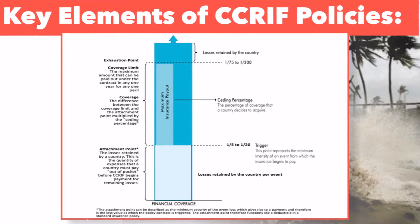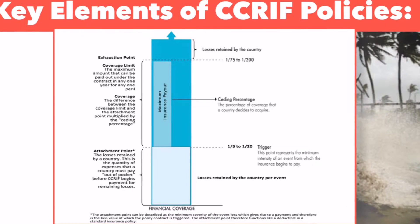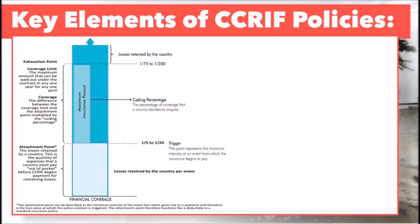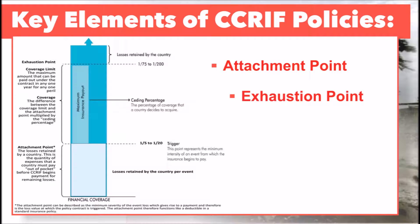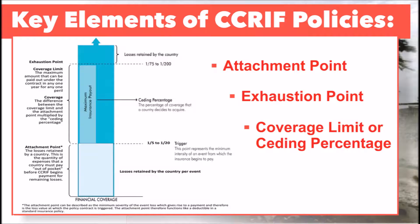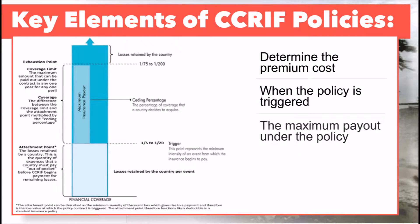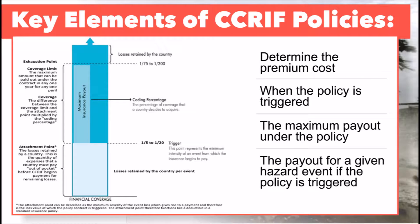When a country is selecting its level of coverage under a CRIF policy, it must make three key decisions: the selection of an attachment point, an exhaustion point, and the coverage limit or seeding percentage. Collectively, these elements — selected by the member government — determine the premium cost, when the policy is triggered, the maximum payout under the policy, and the payout for a given hazard event if the policy is triggered.